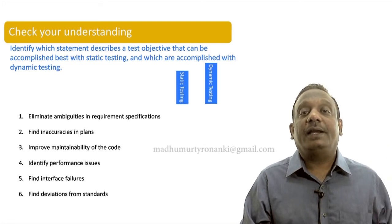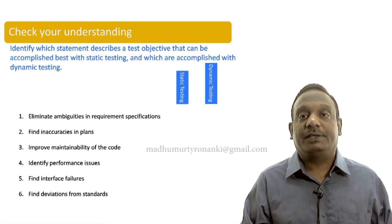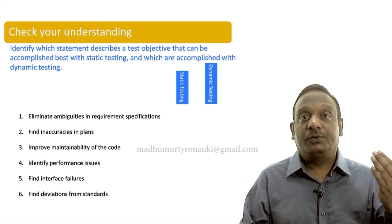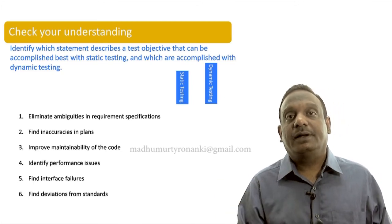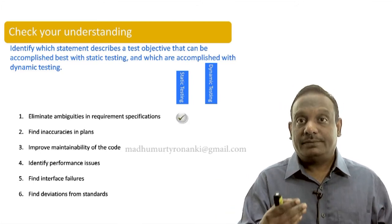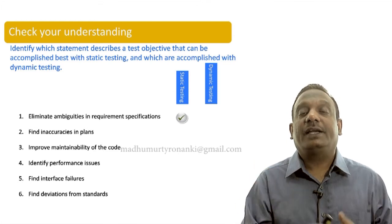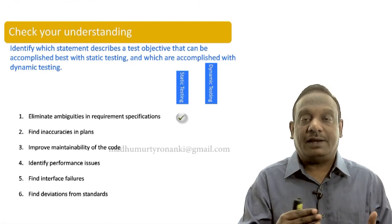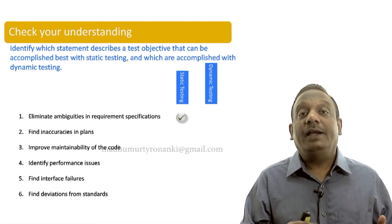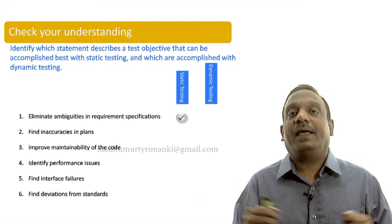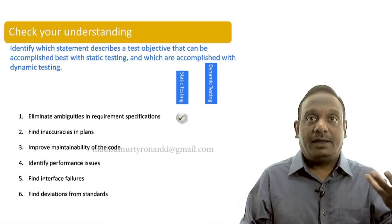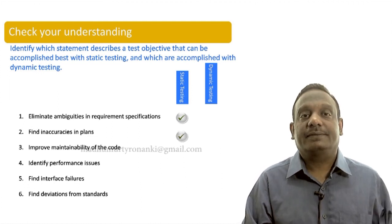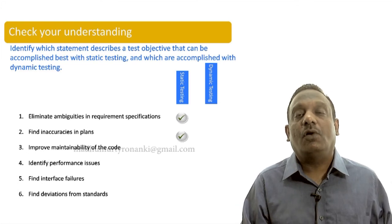One, eliminate ambiguities in requirement specifications. How can it be accomplished? By using static testing or by using dynamic testing? Which one? Yes, you are right. Static testing can far more easily find these problems and far more early in the life cycle these problems can be found. Find inaccuracies in plans. A plan document is there. Check for inaccuracies and find them. How can it be found?